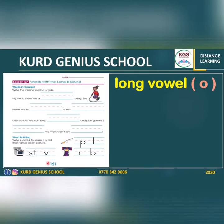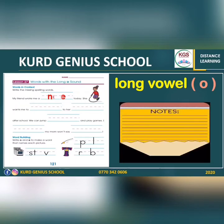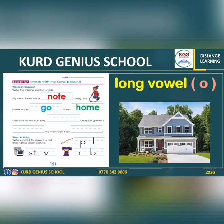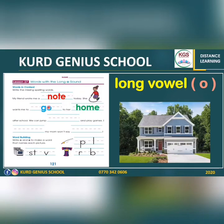Now it's time to go to page 121. Here we have two exercises. The first one is a text with some blanks that we should fill with correct words. I'm going to read the text: 'My friend wrote me a note.' She wants me to go to her home — that means she wants me to visit her after school. In 'home,' 'go,' and 'note,' we all have long vowel O.